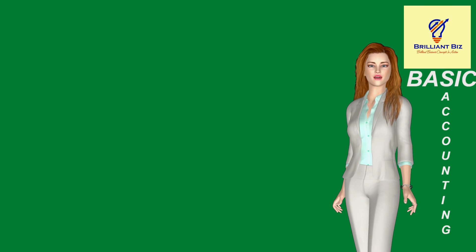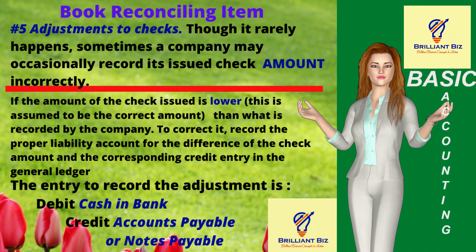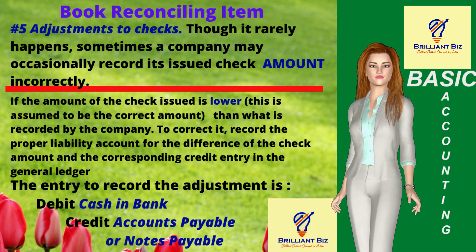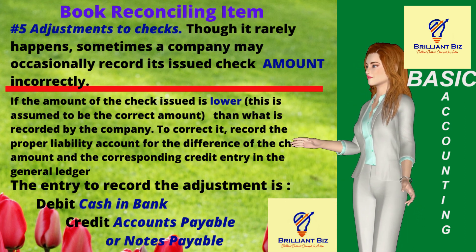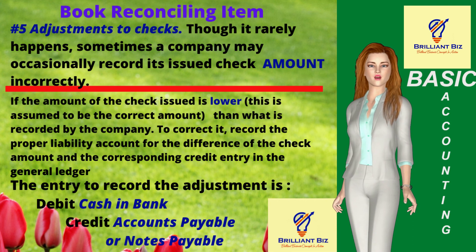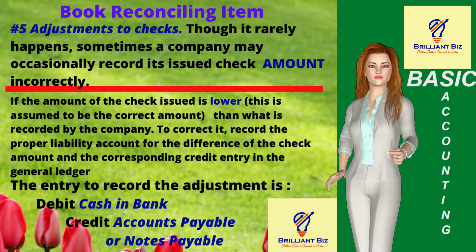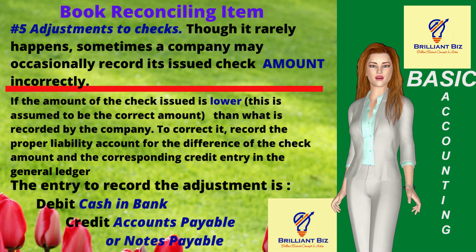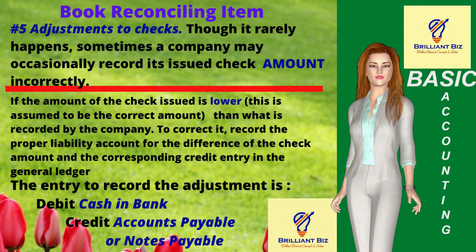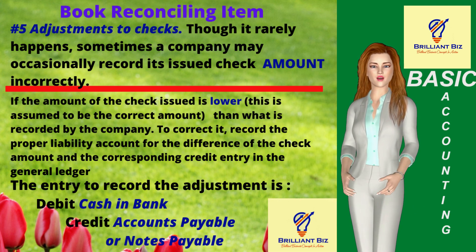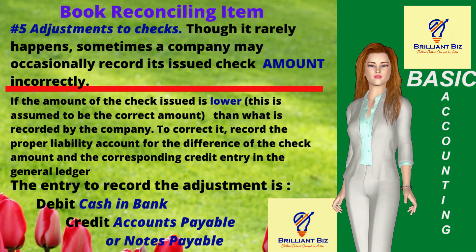Number five: adjustments to checks. Though it rarely happens, sometimes a company may occasionally record its issued check incorrectly. When that happens, the company must adjust its book balance to correct the error. The adjusting entry would depend on the error committed. If the amount of the check issued is lower — this is assumed to be the correct amount — than what is recorded by the company, the adjusting entry is debit cash in bank account and credit accounts or notes payable account or other proper liability account for the difference of the check amount in the corresponding credit entry in the general ledger cash in bank account.